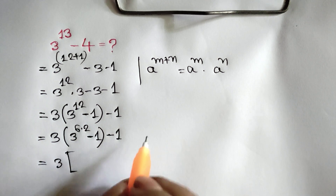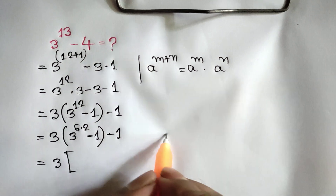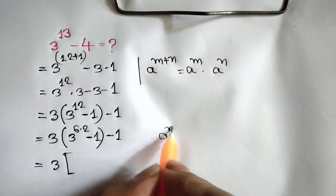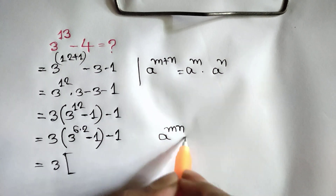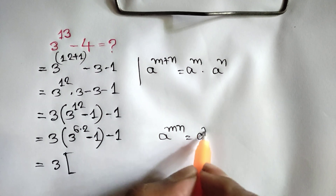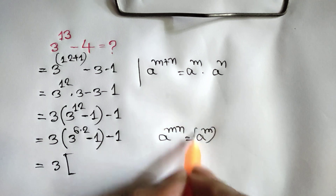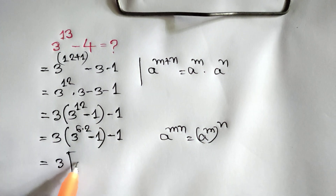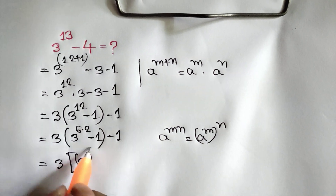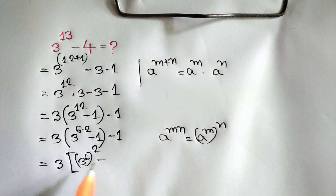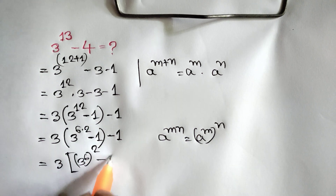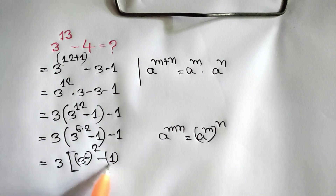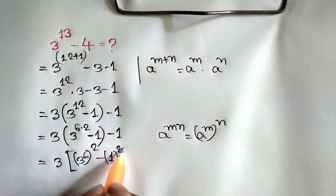Now we know a to the power m times n is equal to a to the power m, whole to the power n. So we can write here 3 to the power 6, whole squared, minus 1, which can be written as 1 squared.